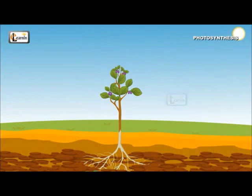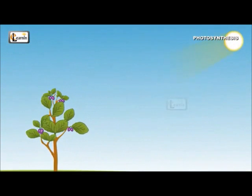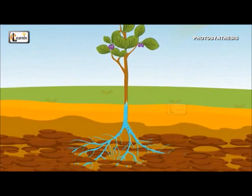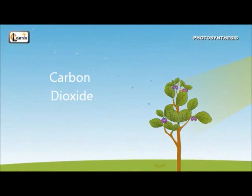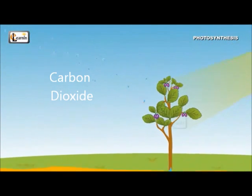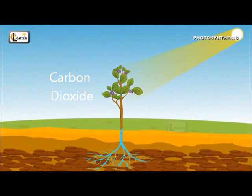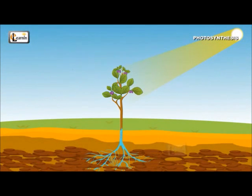Plants get light from the sun, water from the ground, and carbon dioxide from the air. All of these factors, including air, water, carbon dioxide, and sunlight, together help plants produce their own food.